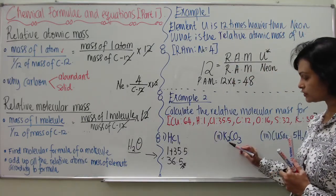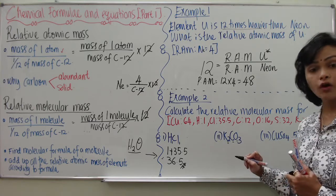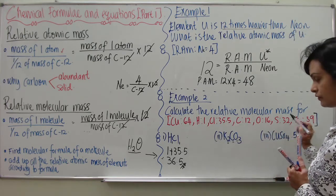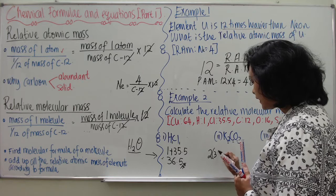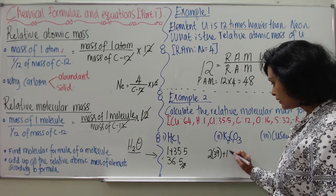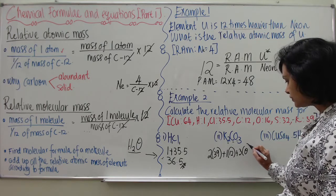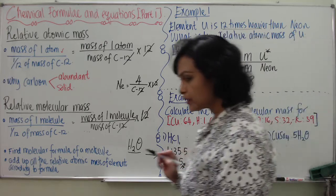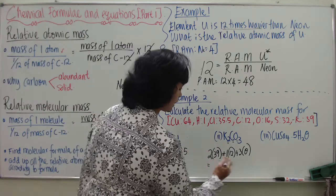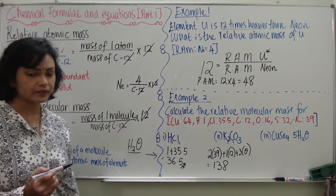For potassium carbonate (K₂CO₃): you have two atoms of potassium, one atom of carbon, and three atoms of oxygen. So the calculation is 2×39 + 12 + 3×16 = 138. Students can verify this and get the total answer of 138.